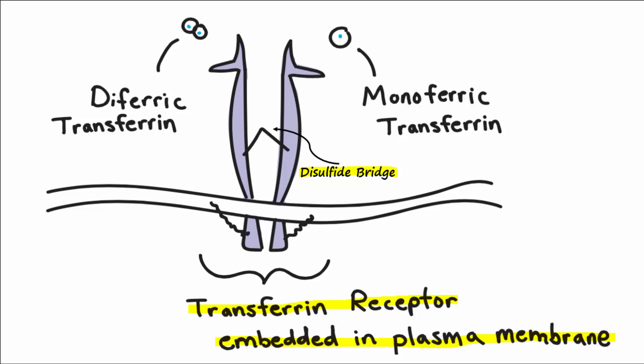In the process of cells taking in iron, the monoferric or diferric transferrin binds to the transferrin receptor embedded in the cell's membrane. The diferric version will bind to the receptor with higher affinity compared to monoferric or apotransferrin, which has no bound iron.